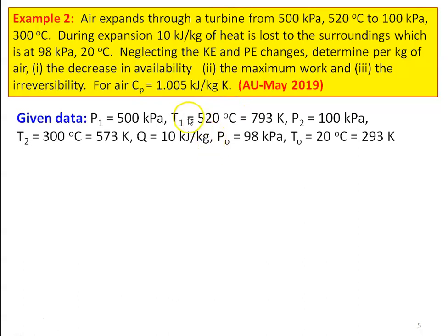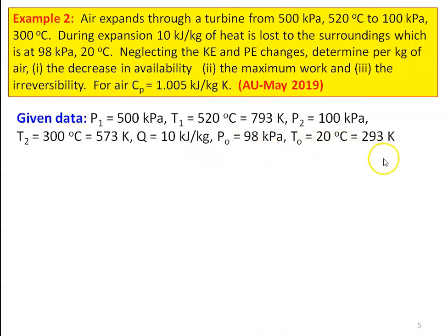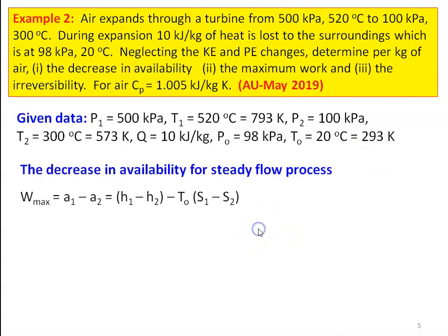Given data: P1 = 500 kPa, T1 = 520°C = 793 K, P2 = 100 kPa, T2 = 300°C = 573 K, Q = 10 kJ/kg, P0 = 98 kPa, T0 = 20°C = 293 K. The decrease in availability for steady flow process equals the maximum work. So questions 1 and 2 have the same answer.